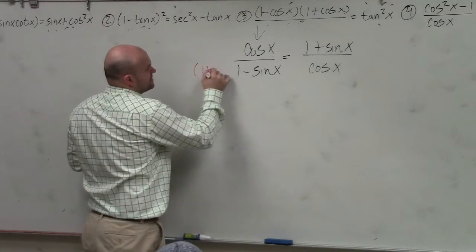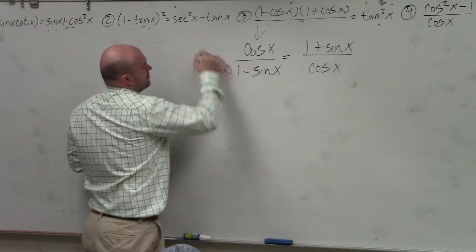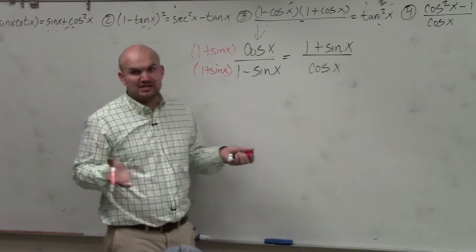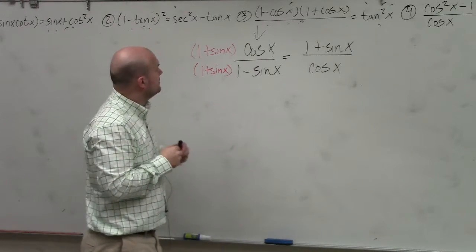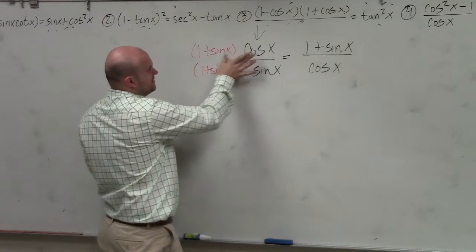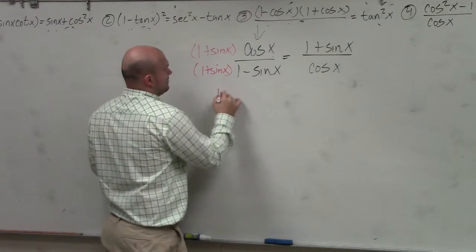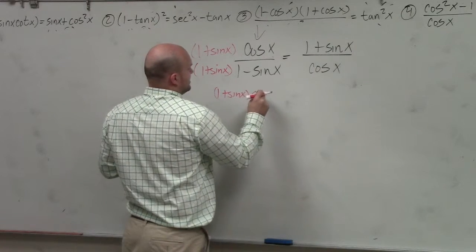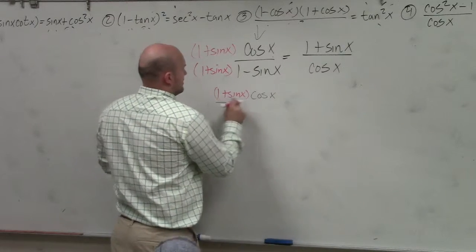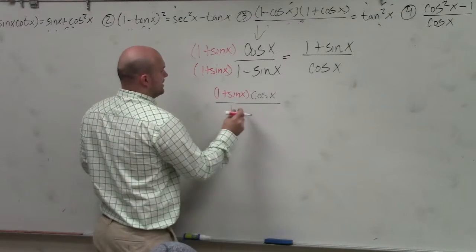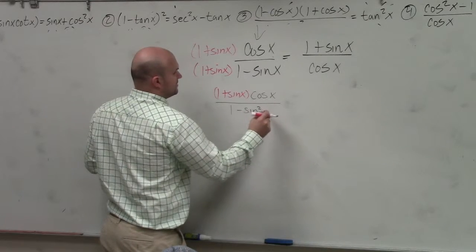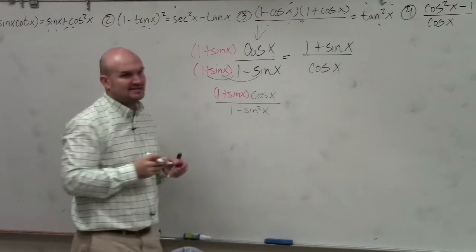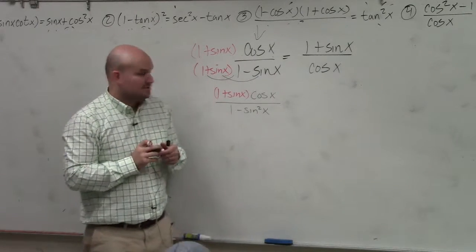So if I multiply this by 1 plus sine of x over 1 plus sine of x, as long as I multiply something on the top and the bottom by the same number, I'm not changing the answer. Therefore I'm going to leave this as is. I have 1 plus sine of x, I could distribute it but I'm just going to leave it out. This becomes cosine of x, and then this becomes 1 minus sine squared of x. Difference of two squares - middle terms cancel to 0 or add to 0.